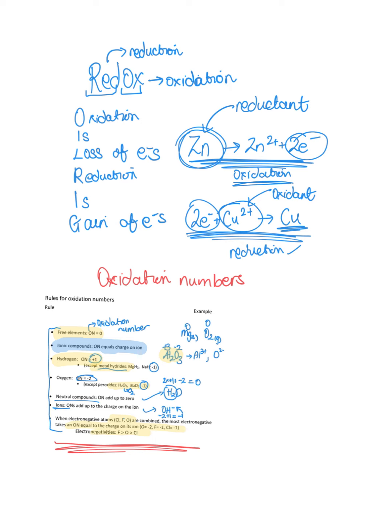Hydrogens always have an oxidation number of +1, except in metal hydrides. Oxygen will always have an oxidation number of -2, except in peroxides. In neutral compounds, the oxidation numbers add up to zero.